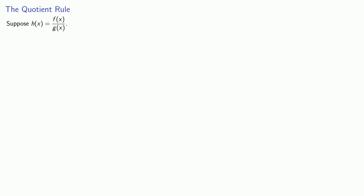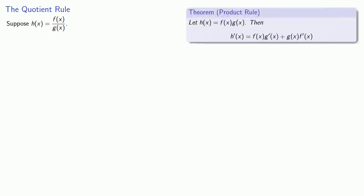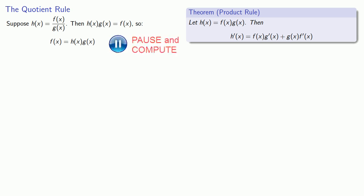What if we have a quotient of two functions? If you have a hammer, every problem looks like a nail — in this case we just got the hammer of the product rule. So let's rewrite our quotient as a product. Since h of x equals f of x over g of x, cross-multiplying gives us h of x times g of x equals f of x. On the left-hand side I have a product, and I know how to differentiate that. So the derivative of f of x will be h of x times g prime of x plus g of x times h prime of x.